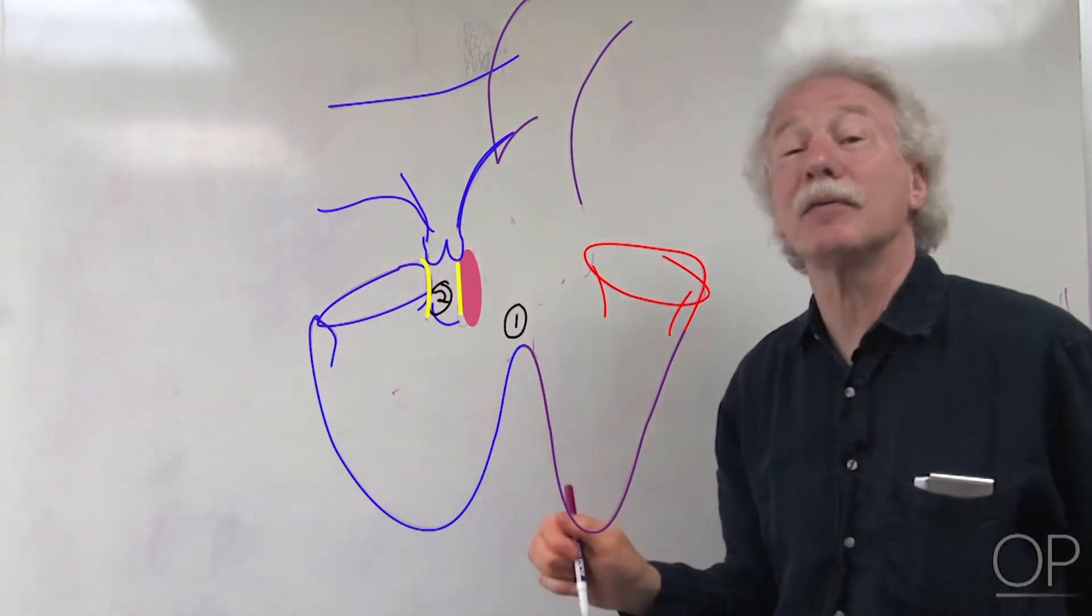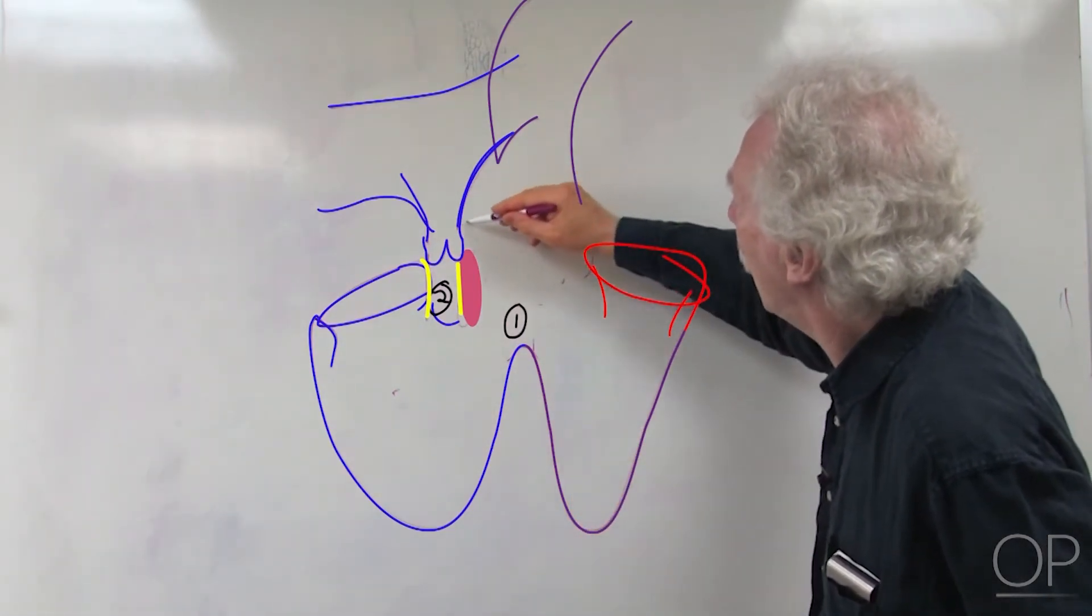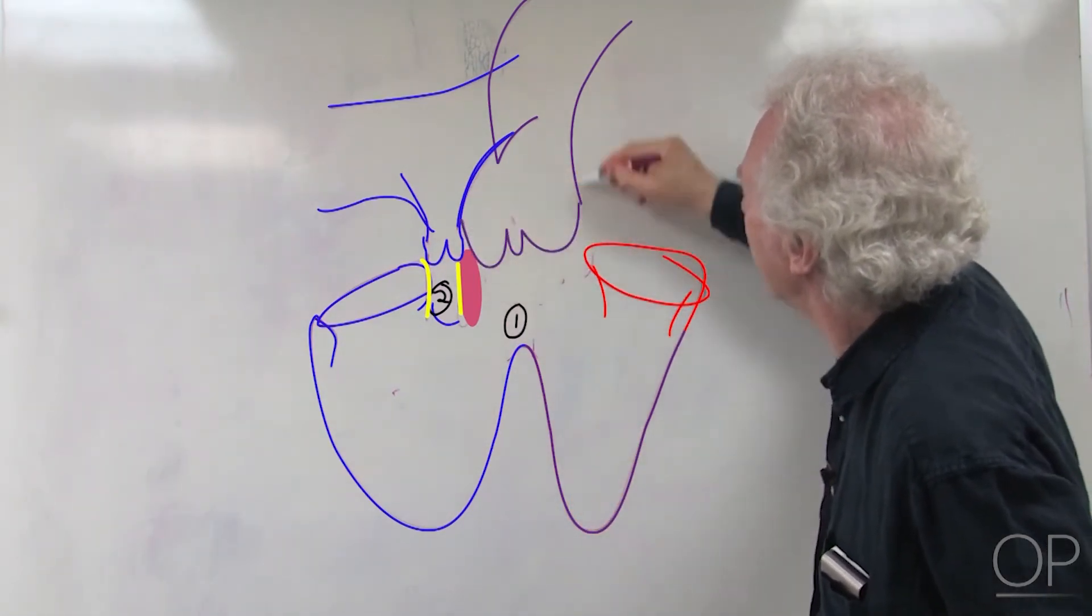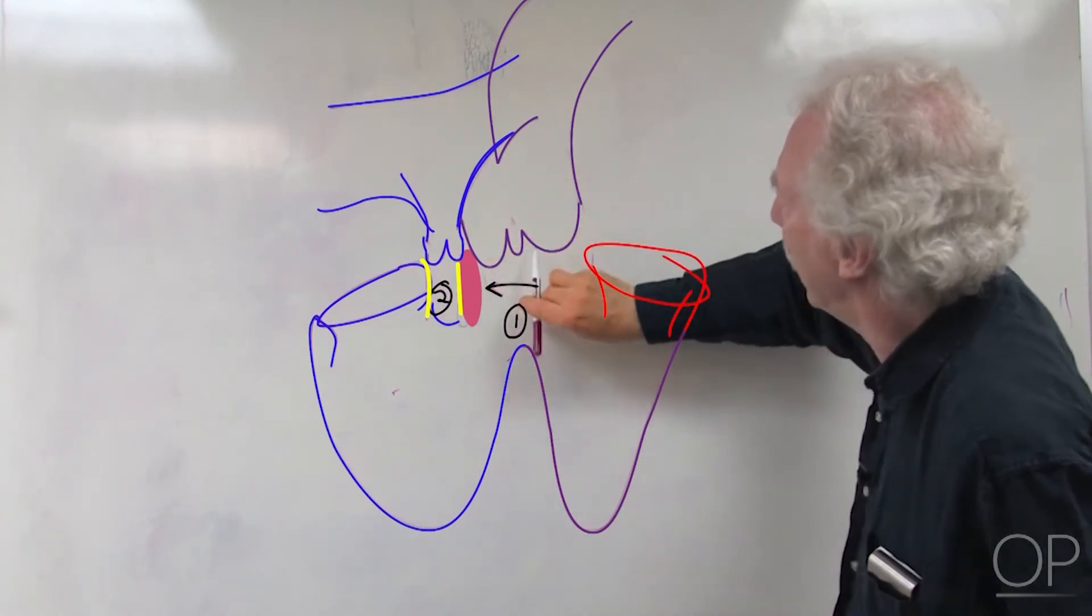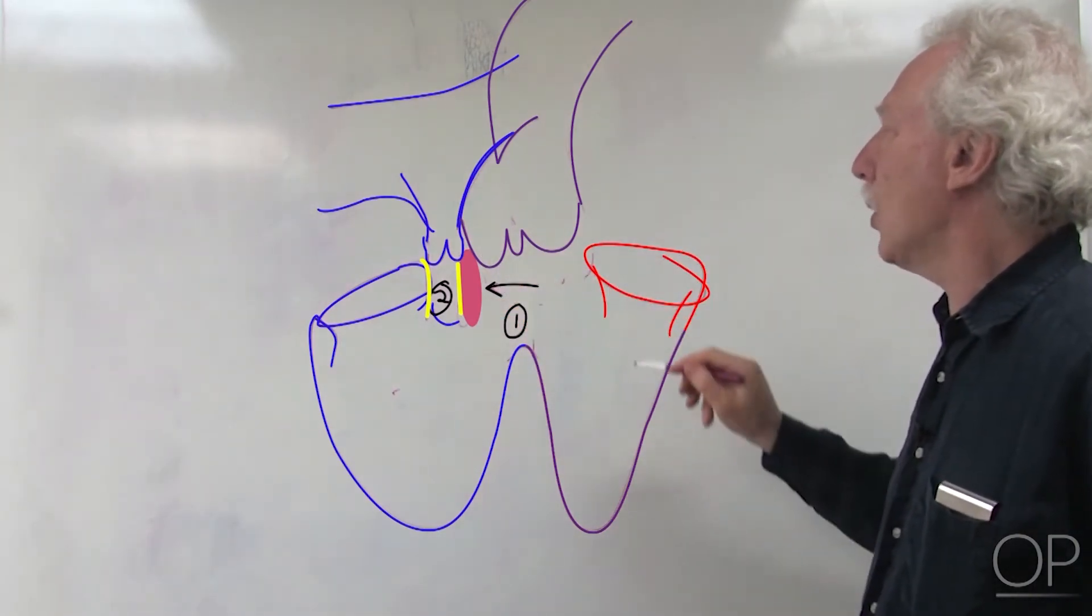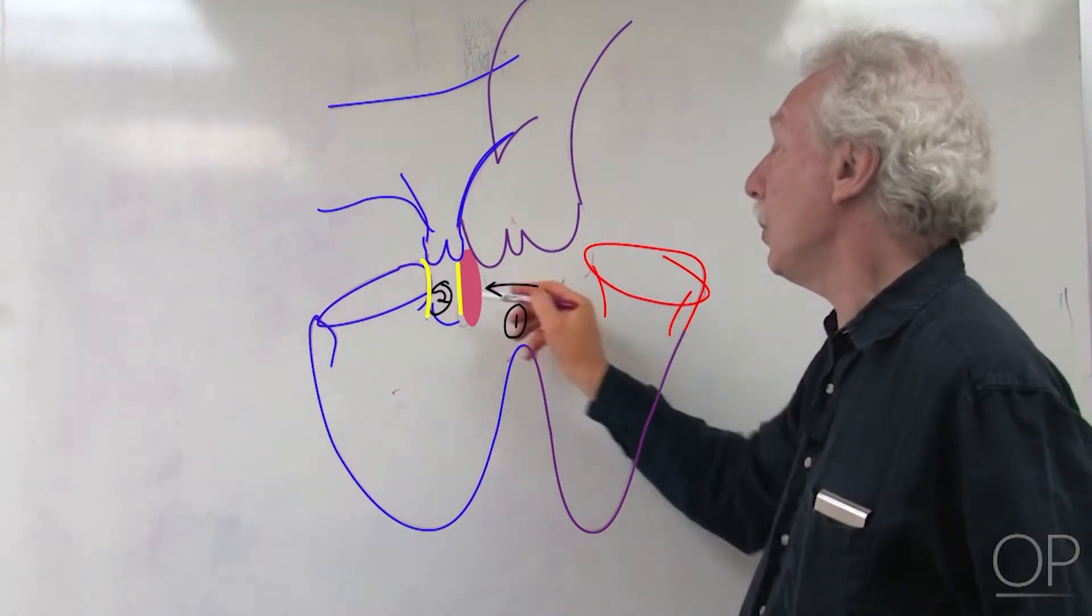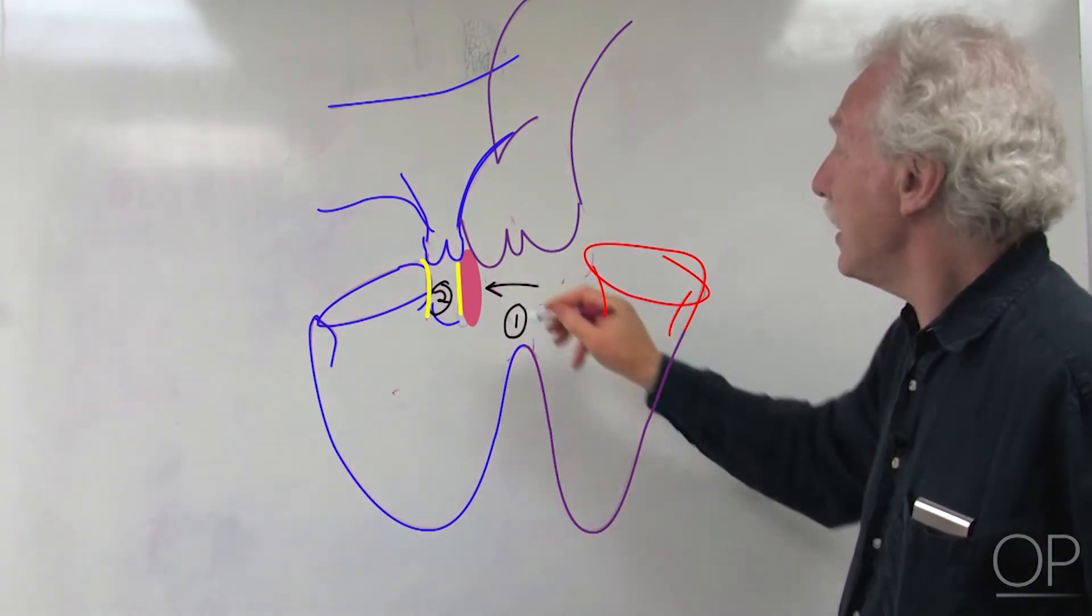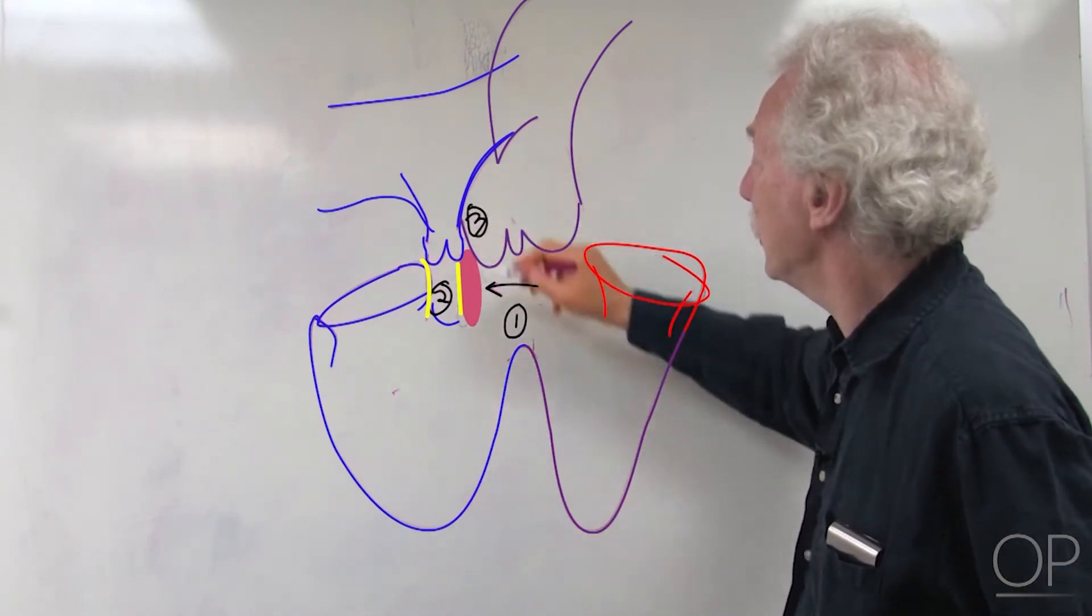The aorta is going to override the septum because it's coming over this way. Instead of being closed by a ventricular septum in the normal position, it's going to appear to override the ventricular septum and sometimes will move quite rightward. That's the third part of Tetralogy of Fallot.